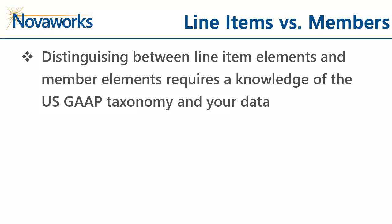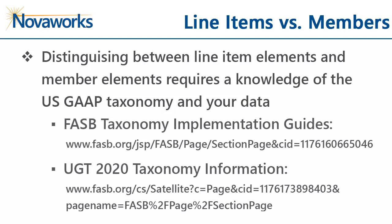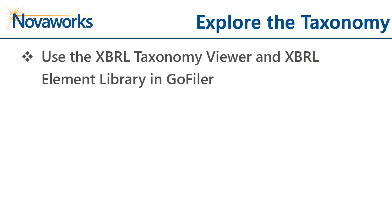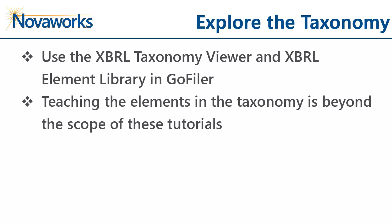Being able to distinguish between XBRL line item elements and XBRL member elements requires a knowledge of the US GAAP taxonomy and the type of data you're tagging. There are some useful resources available here and in the description of the video. You can also use the XBRL taxonomy viewer and the XBRL element library tool in GoFiler to explore the taxonomy. For the purposes of this tutorial, we're not going to go into much depth about how to distinguish between member elements and line item elements, but I'll show a little bit of the taxonomy for one of the tables to demonstrate how you can use the library to explore it.